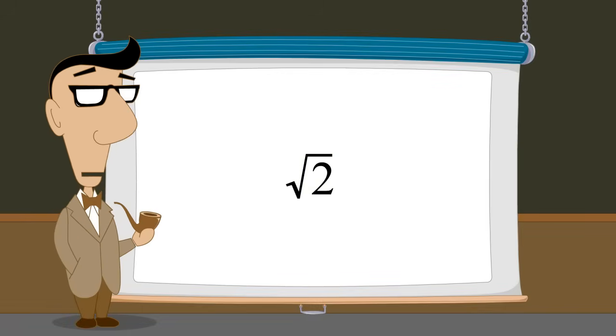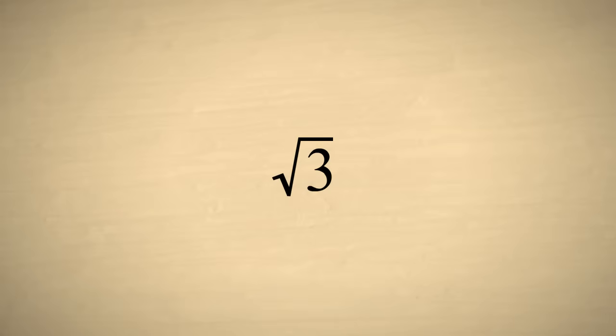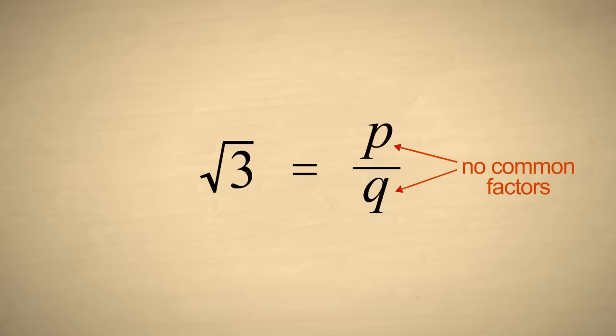This same argument can work for other square roots. For example, we can start with the square root of three and try and represent it as the ratio of two integers with no common factors.